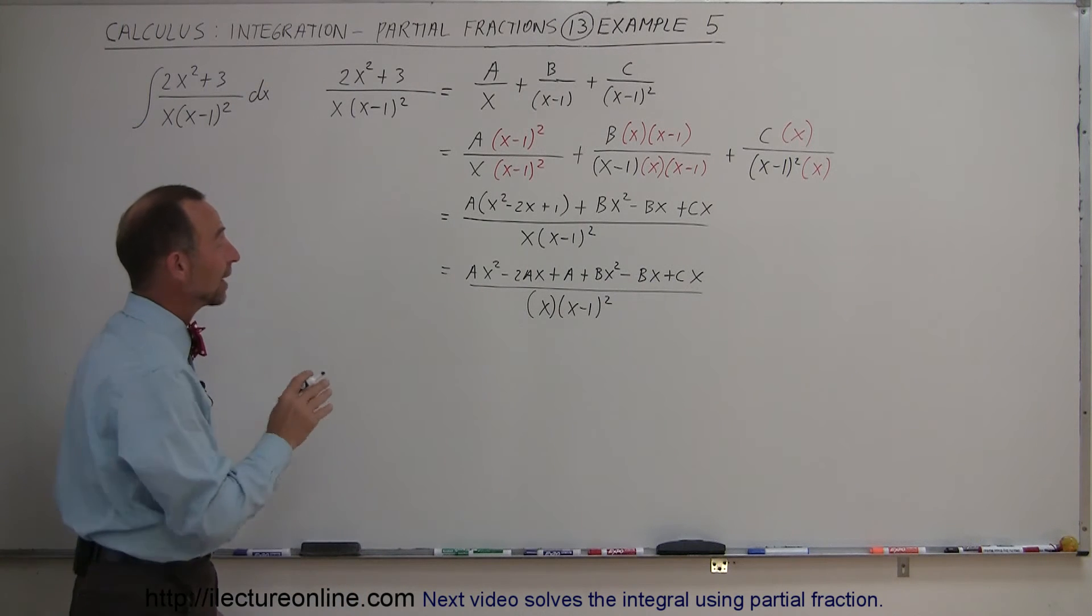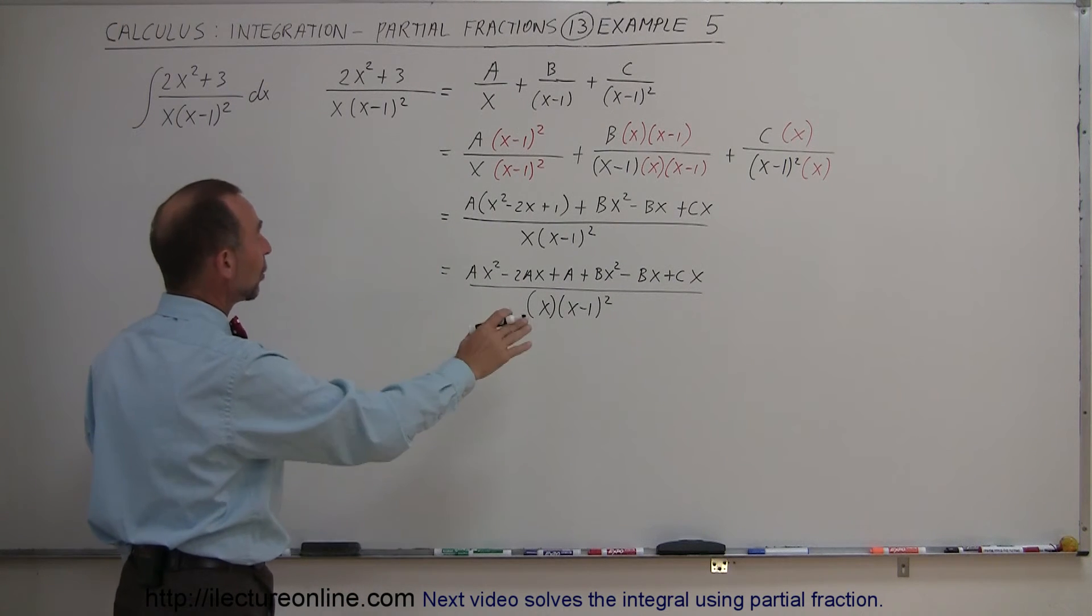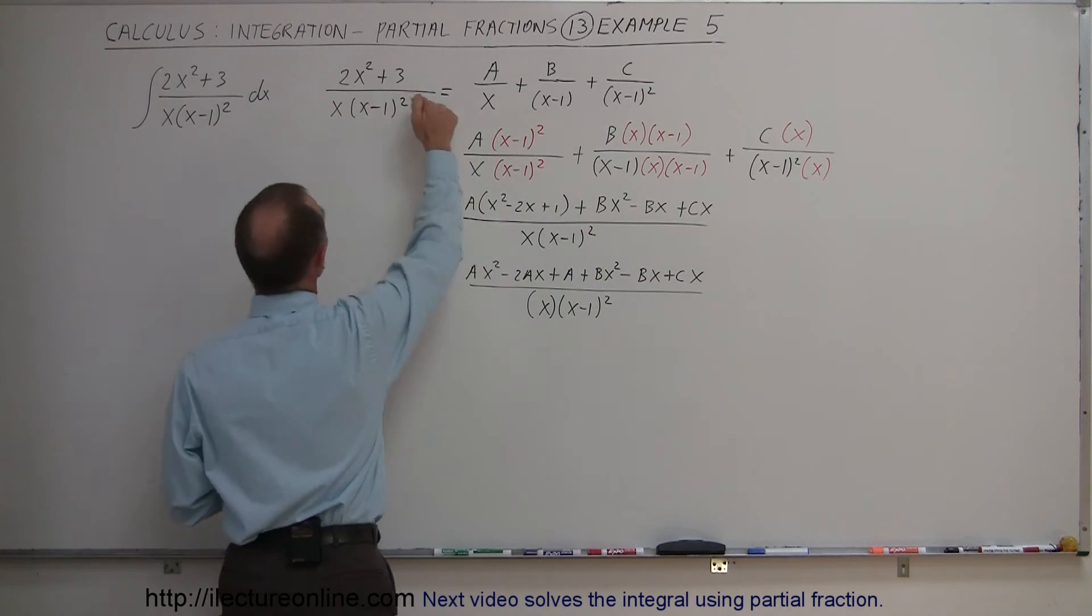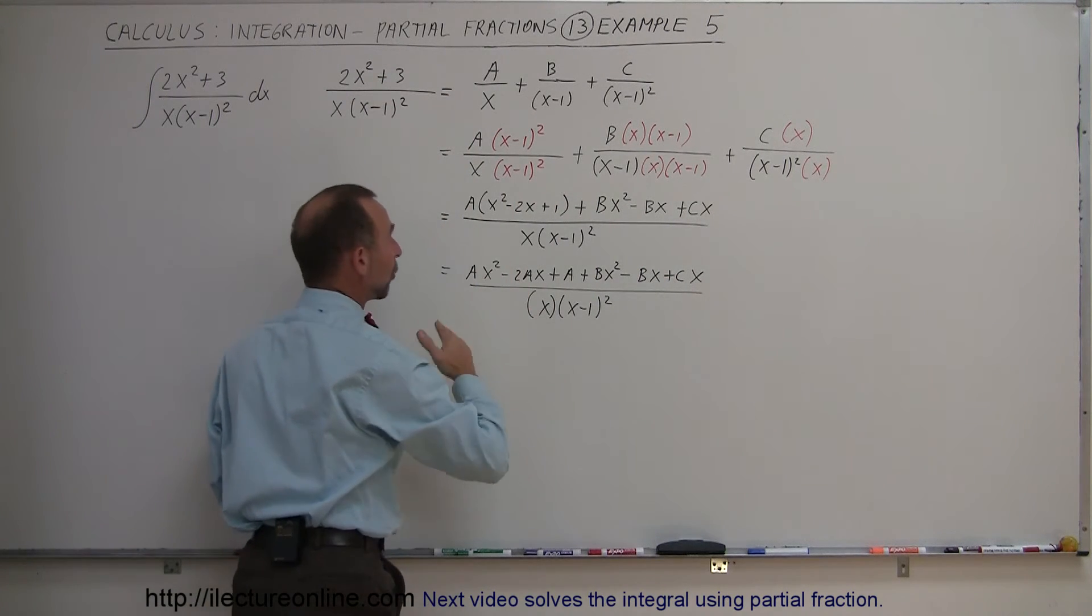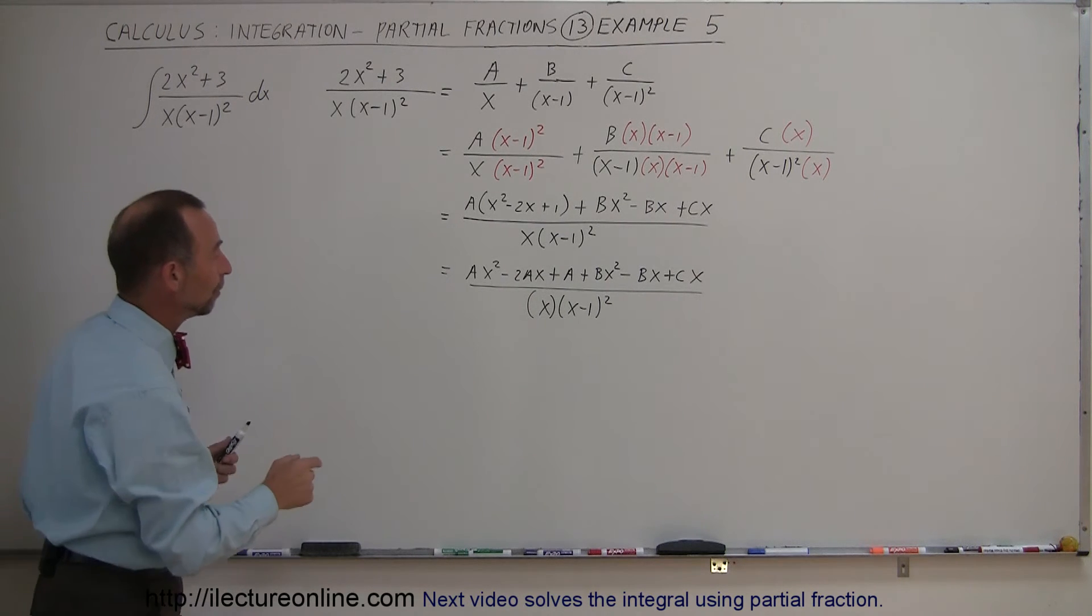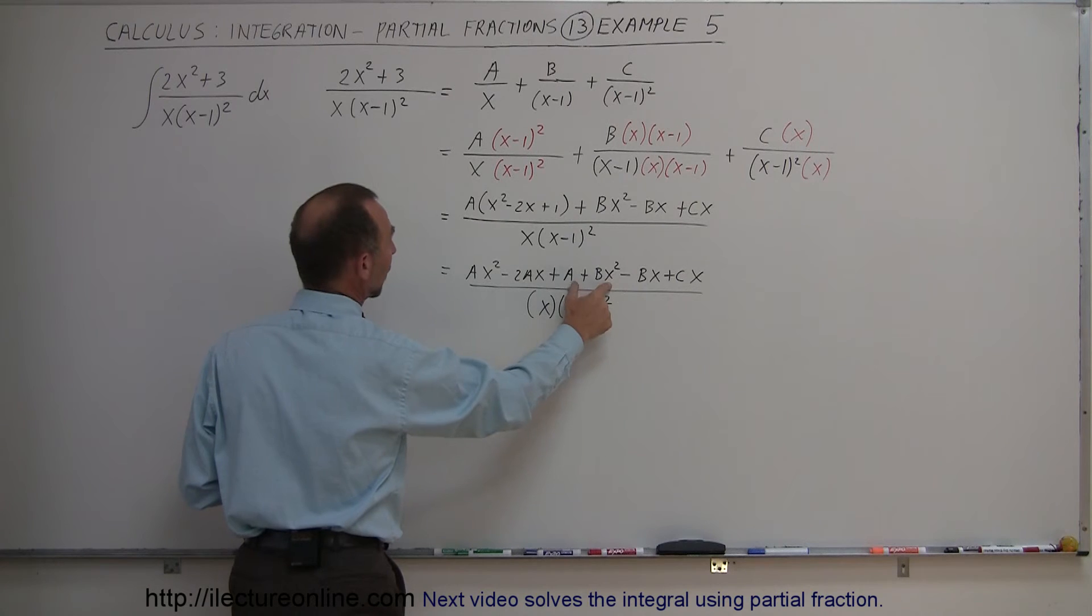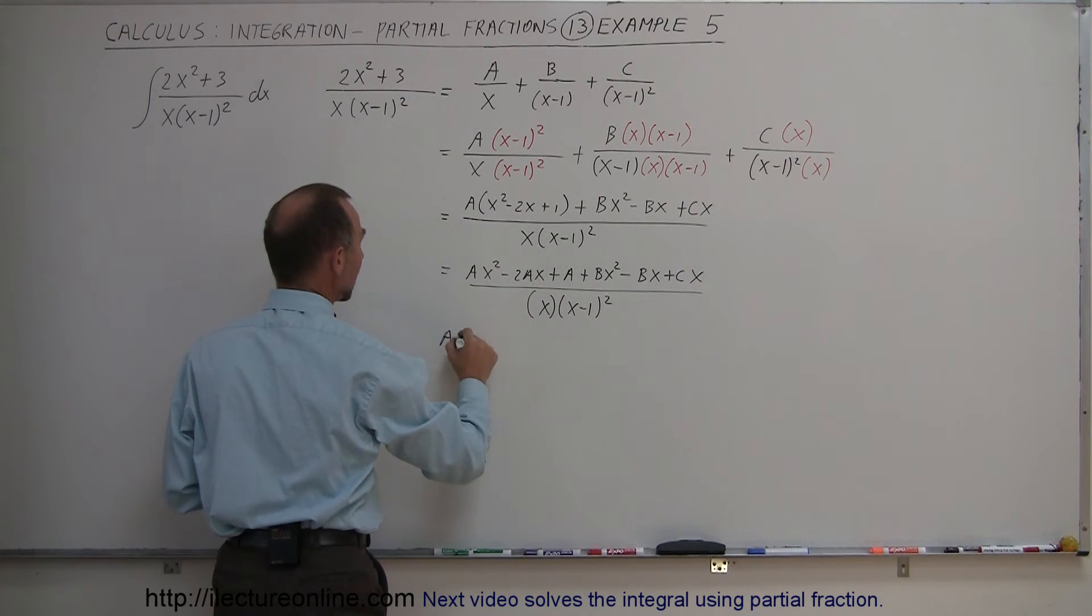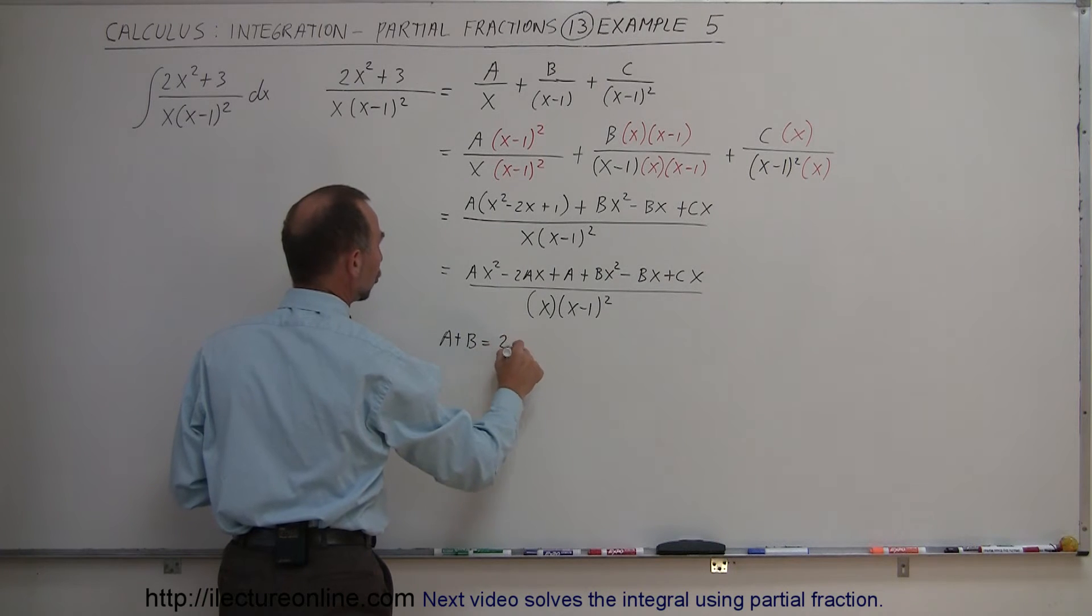Alright, now all we have left to do to find A, B, and C is to set up some equations. And the way we do that is by looking at this numerator right here and looking at this numerator, make sure that the coefficients of x squared, x, and the constant are equal. So here we have an Ax squared plus Bx squared and that must equal 2x squared which means that A plus B must equal 2.